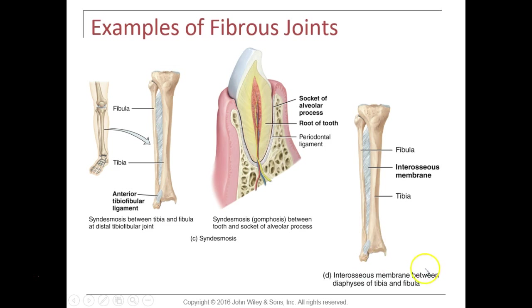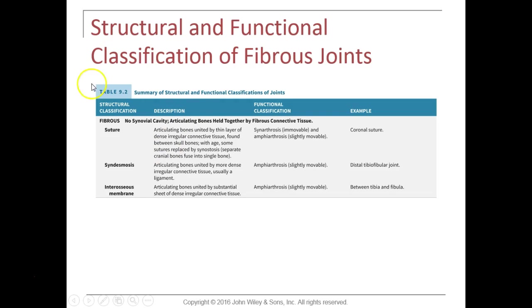The interosseous membrane is a fibrous joint adjoining two bones together — here they show the tibia and fibula. We also have an interosseous membrane between the radius and ulna in the antibrachium, or forearm. So these are fibrous joints: sutures, the two examples of syndesmosis, and the interosseous membrane. There's a table included to review their descriptions, functional classifications, and examples.